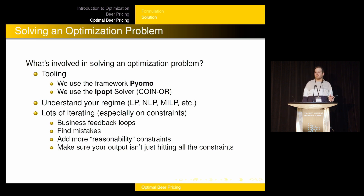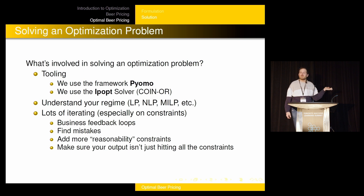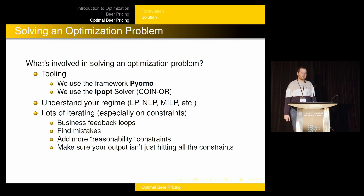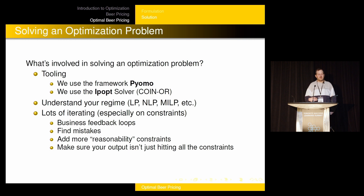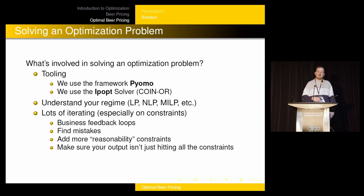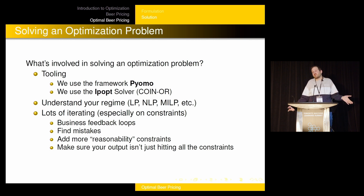Once you have your problem set up — your three components — how do you solve it? Tooling is a big thing. You could try to solve this by hand or write your own code, but probably you shouldn't. There are lots of great tools, even open source ones. We use the framework Pyomo and the solver IPopt, which are both open source and I can recommend them. If you want to solve this problem, you really need to understand what regime you're in. Linear programming is different from nonlinear programming, which is different from mixed-integer linear programming, and so on. In the beer pricing world, we're in nonlinear programming, which is why we use IPopt, part of the open-source coin-or package.